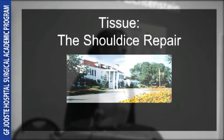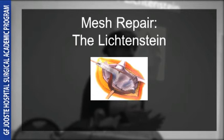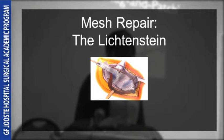The Lichtenstein repair is in my experience the most commonly used repair in this part of the world. It is an anterior repair where mesh is placed over the posterior wall, deep to the external oblique aponeurosis. It is considered a kind of gold standard, and in most of the literature comparing the efficacy of repairs, the Lichtenstein is used as the control.